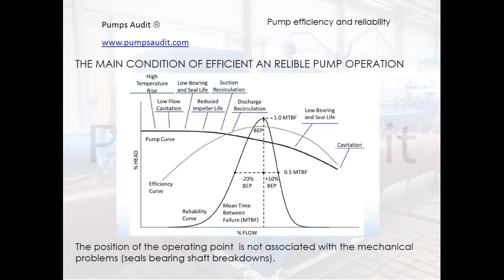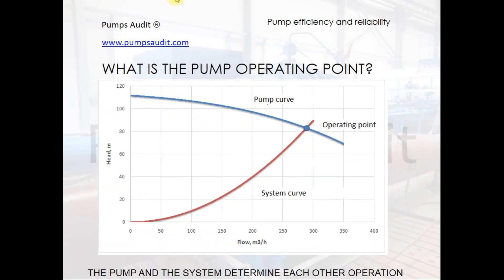This graph illustrates how the reliability of a pump depends on the position of the operating point, and what problems may arise when the operating point lies outside the operating range. If a pump breaks down, the pump user usually thinks the pump is of poor quality and that the manufacturer is responsible — not improper pump operation. The pump operating point, or duty point, is the intersection of the pump curve and the system curve, meaning the pump and the system define the operation of each other.